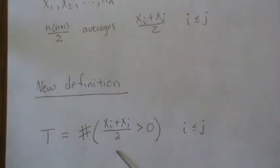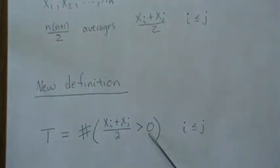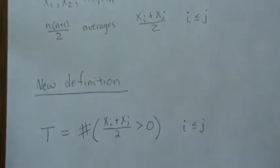It's the number of Walsh averages that are positive, for i less than or equal to j. These are exactly the same.